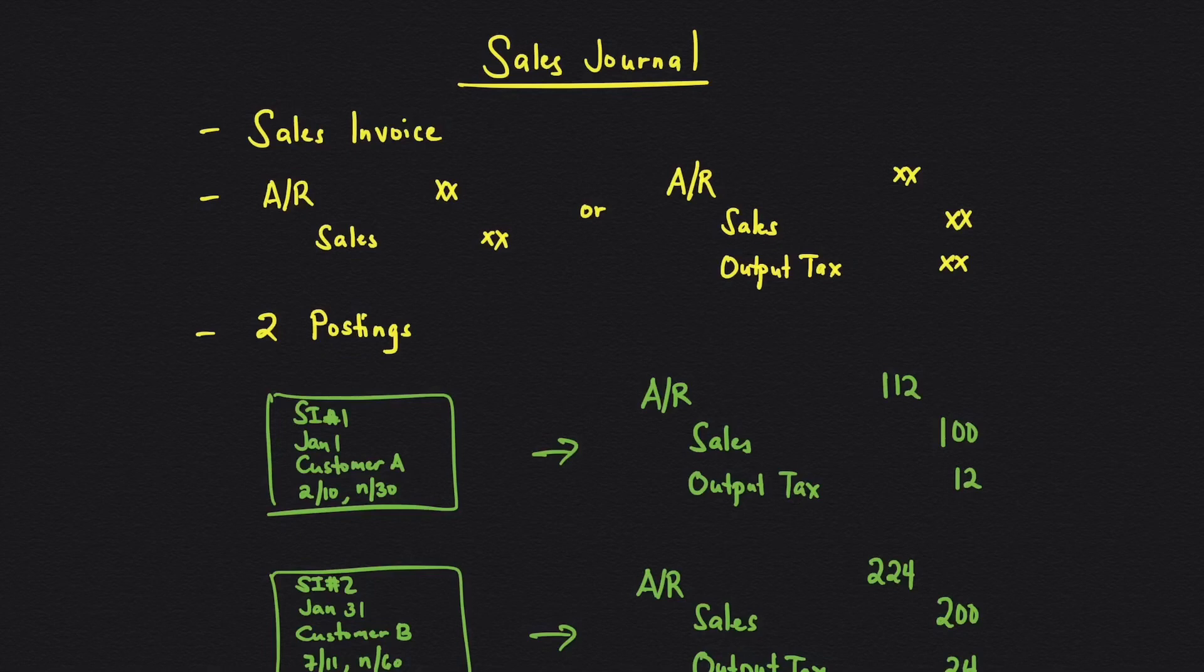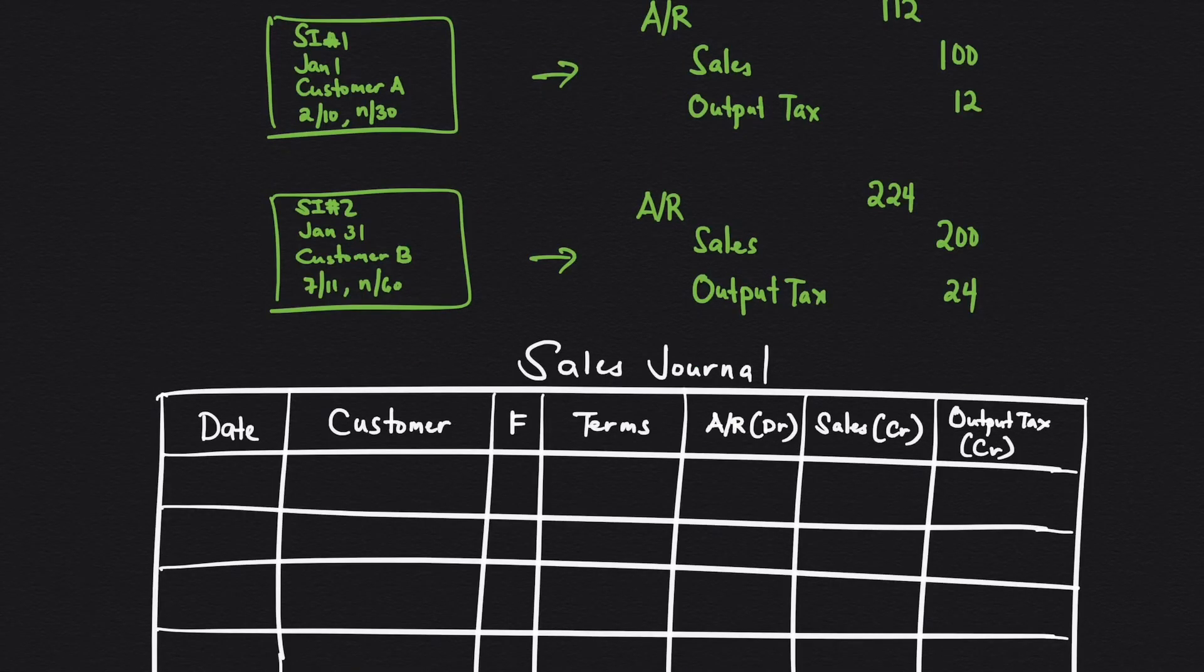In the sales journal, you would be doing two postings: one in the general ledger and one in the subsidiary ledger. To illustrate how sales journal works, we have two transactions. It is supported by the sales invoice. You are the seller here. In the sales invoice, you have the sales invoice number, the date, the customer name, and the terms. You may also see other details.